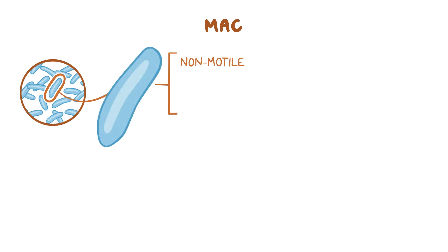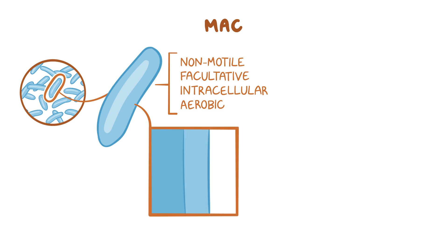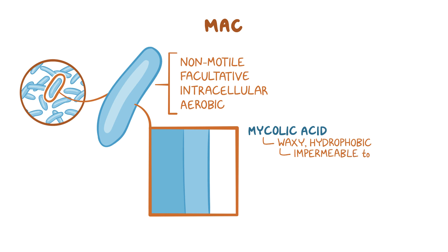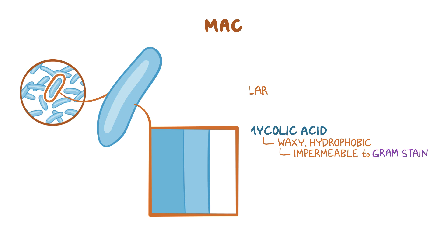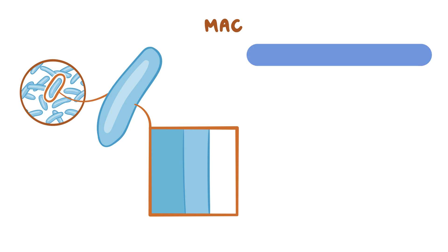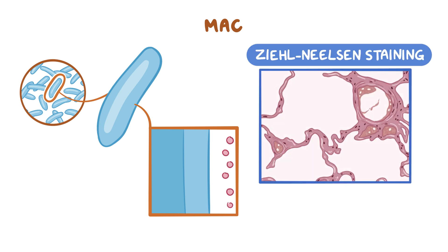MAC are non-motile, facultative intracellular bacteria, which means they can survive both inside and outside the cell. They're also aerobic, which means they need oxygen to survive. They have a high content of mycolic acid in their cell wall, which makes them waxy, hydrophobic, and impermeable to routine stains such as gram stain. So they need special staining methods to be visualized, such as Ziehl-Neelsen staining, which is able to penetrate the waxy mycobacterial cell wall.